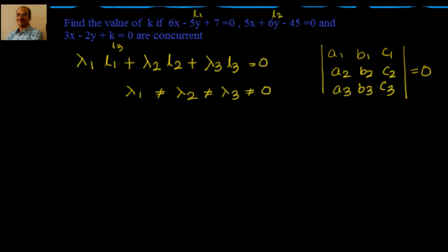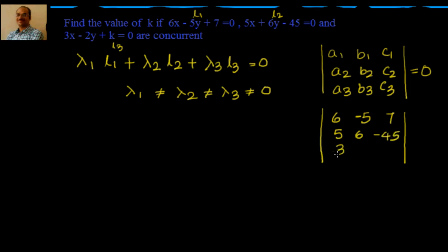The first and second methods we are already aware of. First, let's look into the second method — I will just give you the values: a1, b1, c1 is 6, minus 5, 7; then 5, 6, minus 45; and 3, minus 2, k. I think you can easily find out the determinant of this, equate it to 0, and find out the value. You should get k equal to 1.